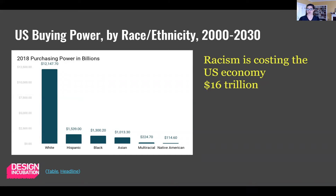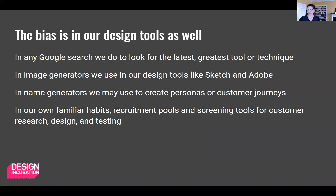Also, racism is costing the US economy $16 trillion. We ignore these non-white audiences, customers, and users of our design solutions at our peril. Whether you realize it or not, these biases exist in any algorithm-powered tools — any Google search, any image generators, for instance — that you may already be using. And they can seep into our design processes when we're short on time or forced by budgets to cut corners. We fall back on familiar habits, using recruitment pools made up of friends and family networks who are also going to be largely white because we're largely white.